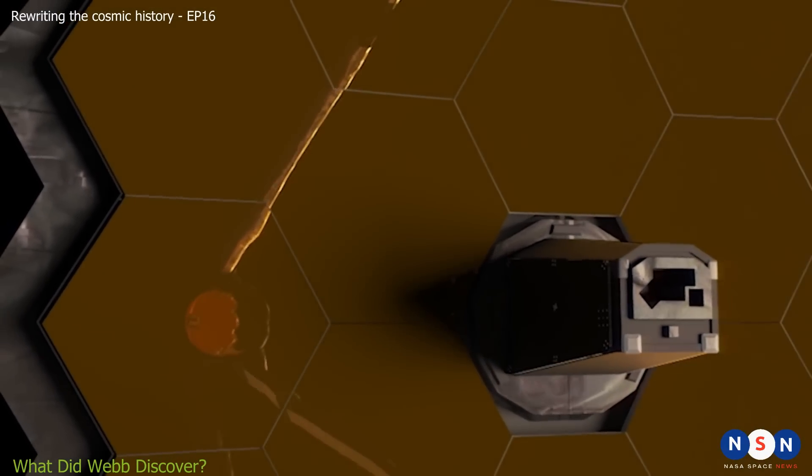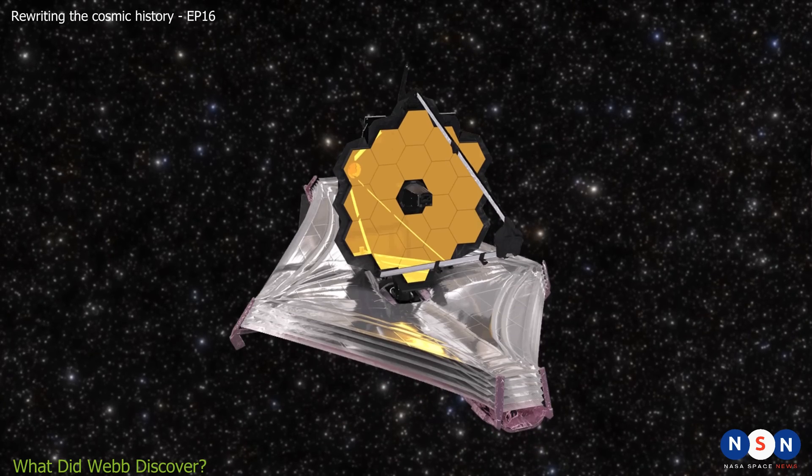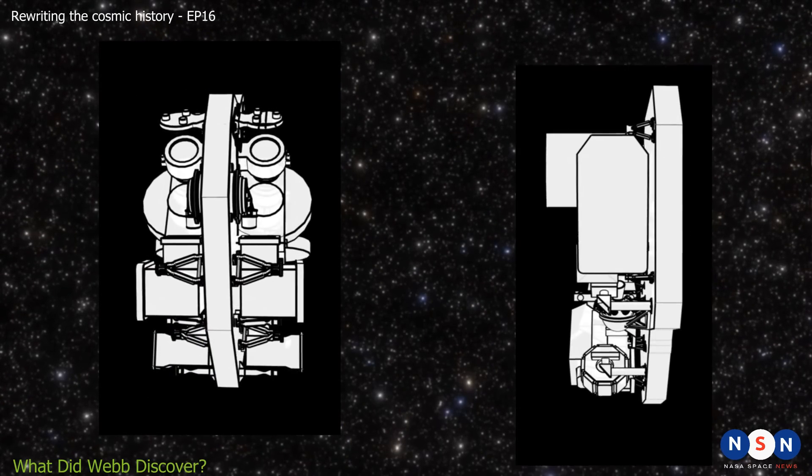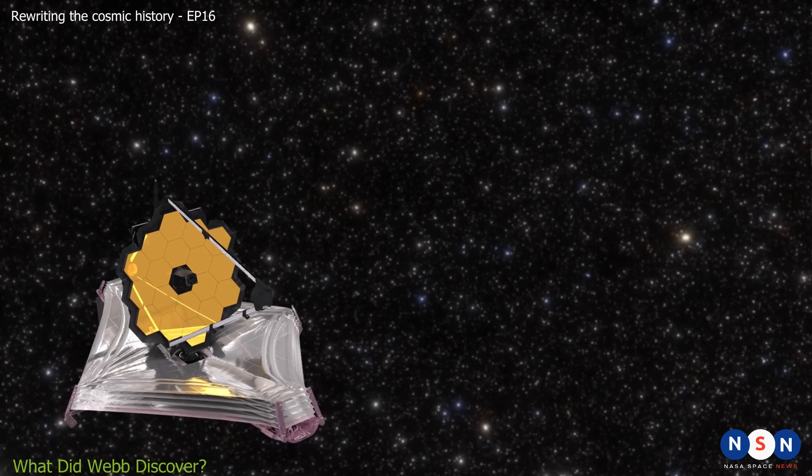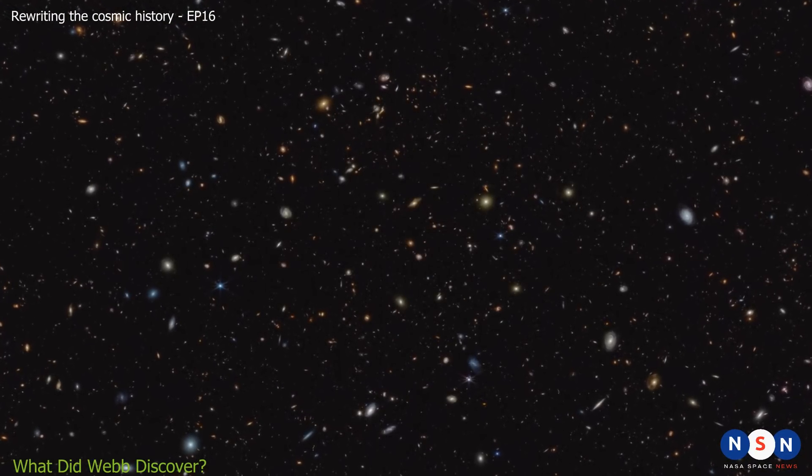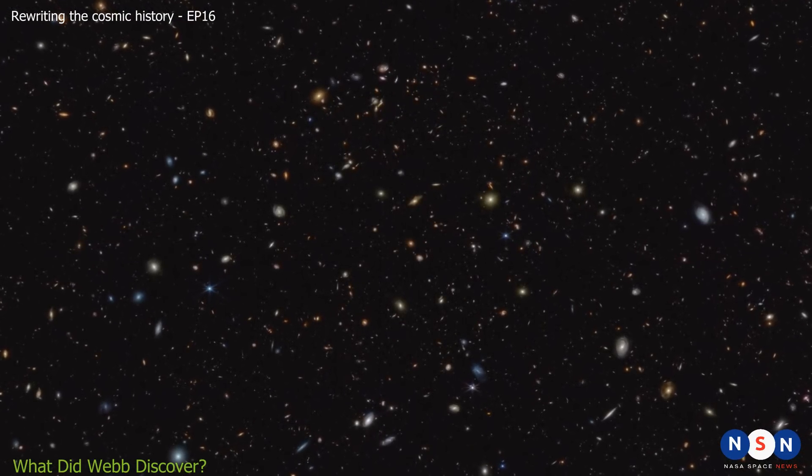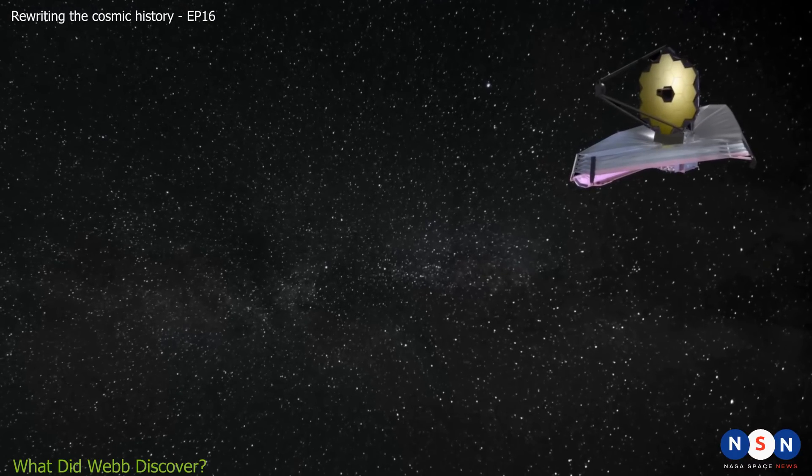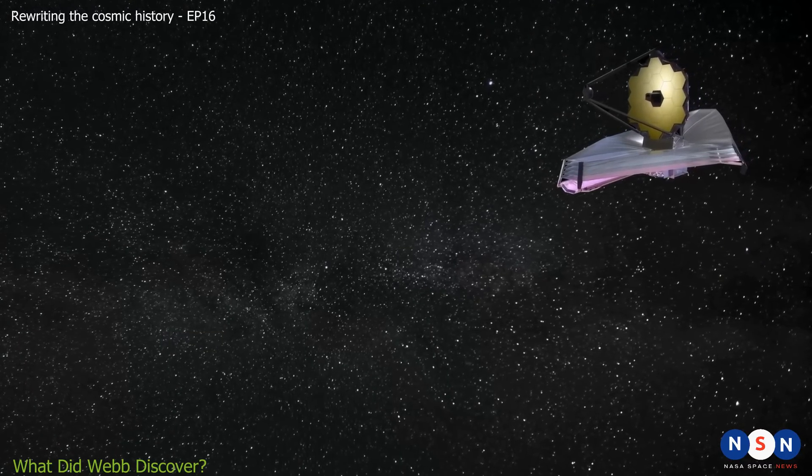Recently, Webb made a remarkable discovery. Using two of its instruments, NIRCAM and NIRSPEC, it conducted a deep survey of two regions of the sky, called GOODS North and GOODS South. These regions are known to contain thousands of galaxies at various distances and ages. Webb spent 50 hours observing each region, looking for the faintest and most distant galaxies ever seen.